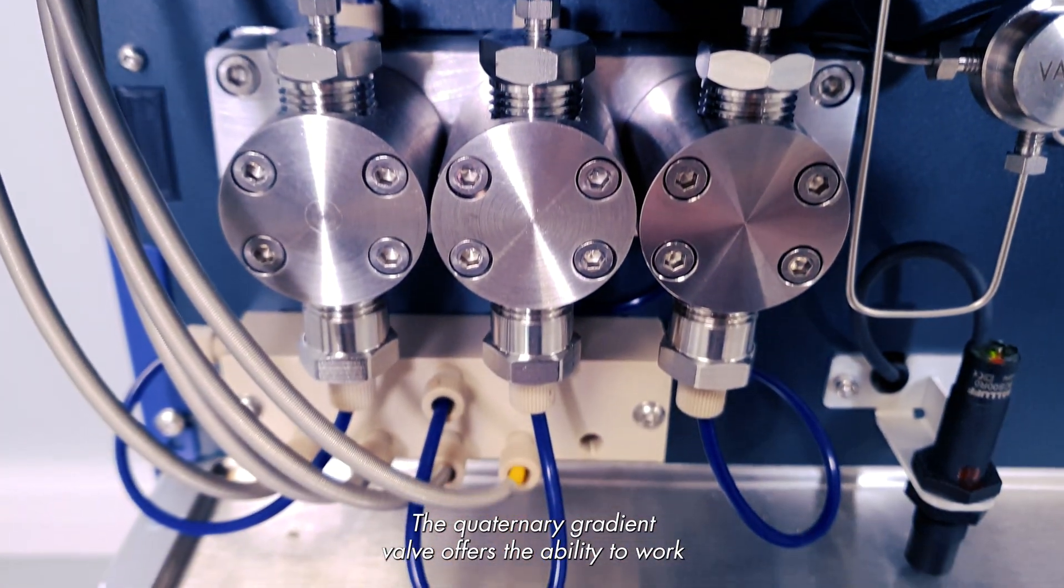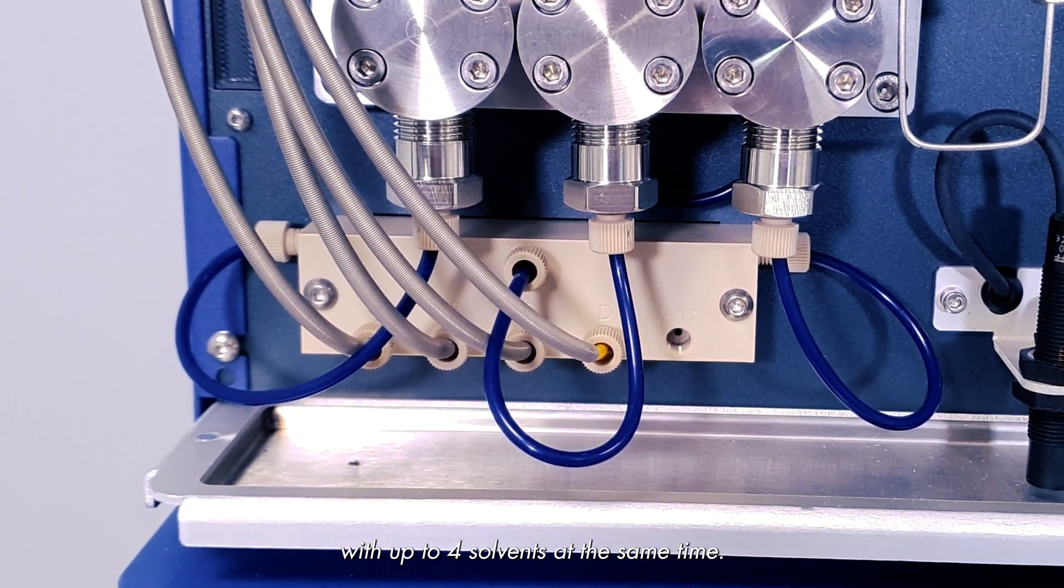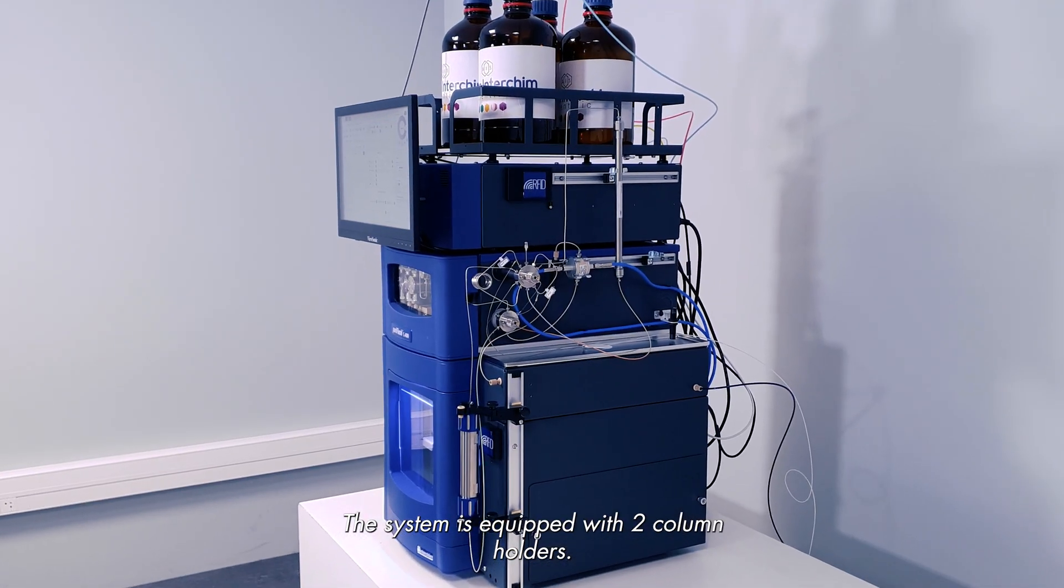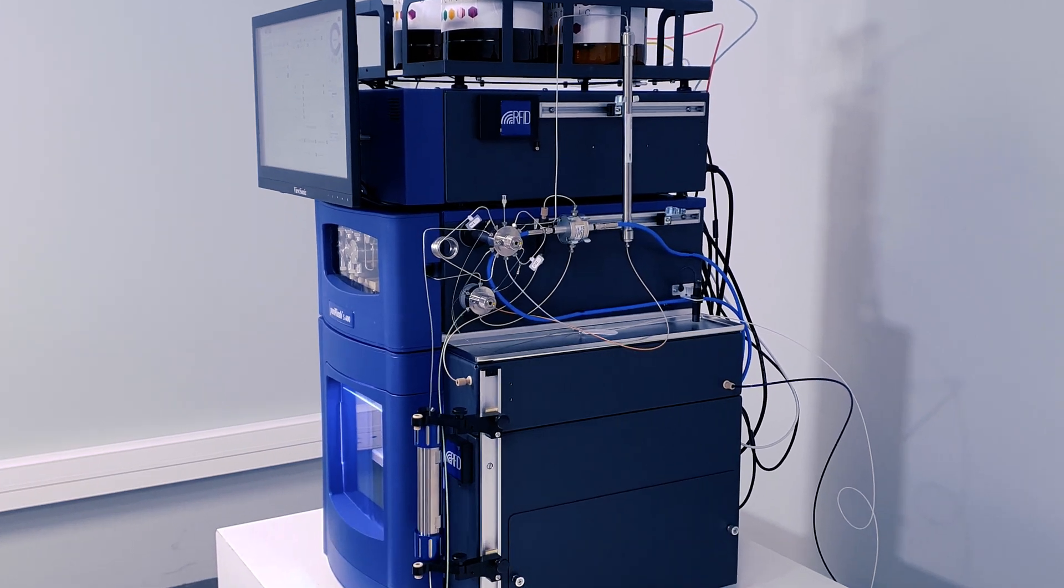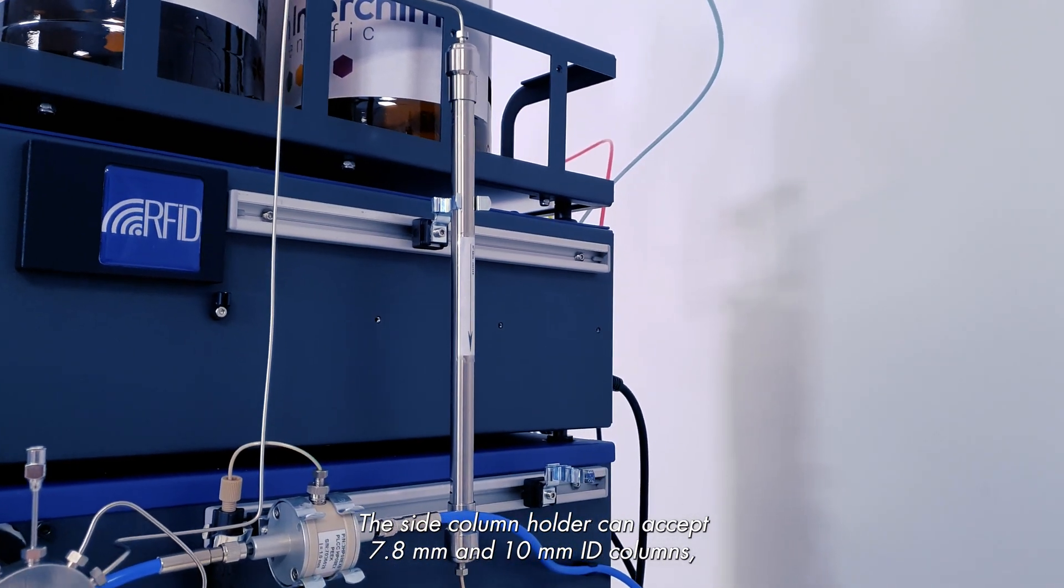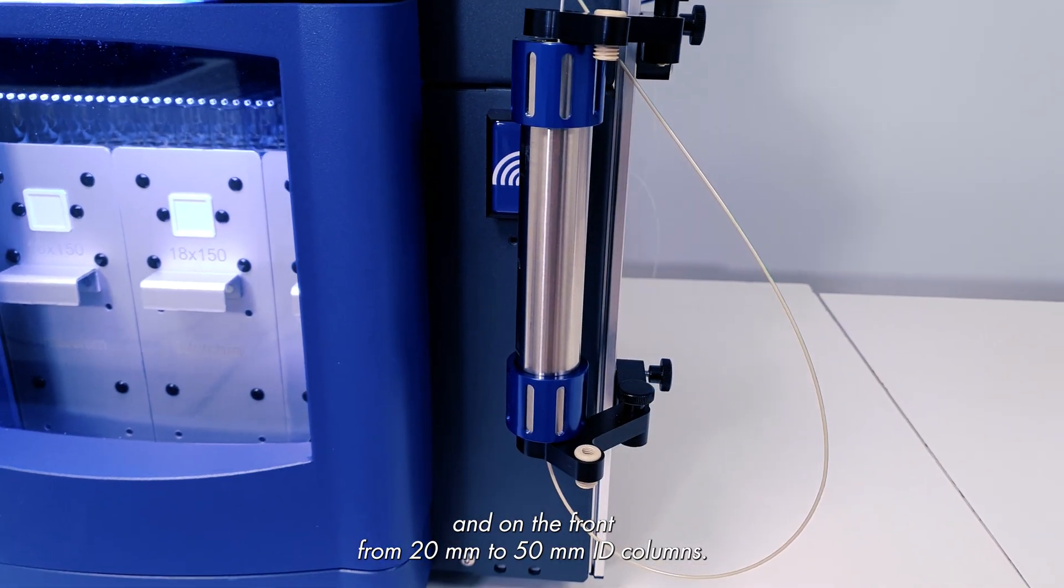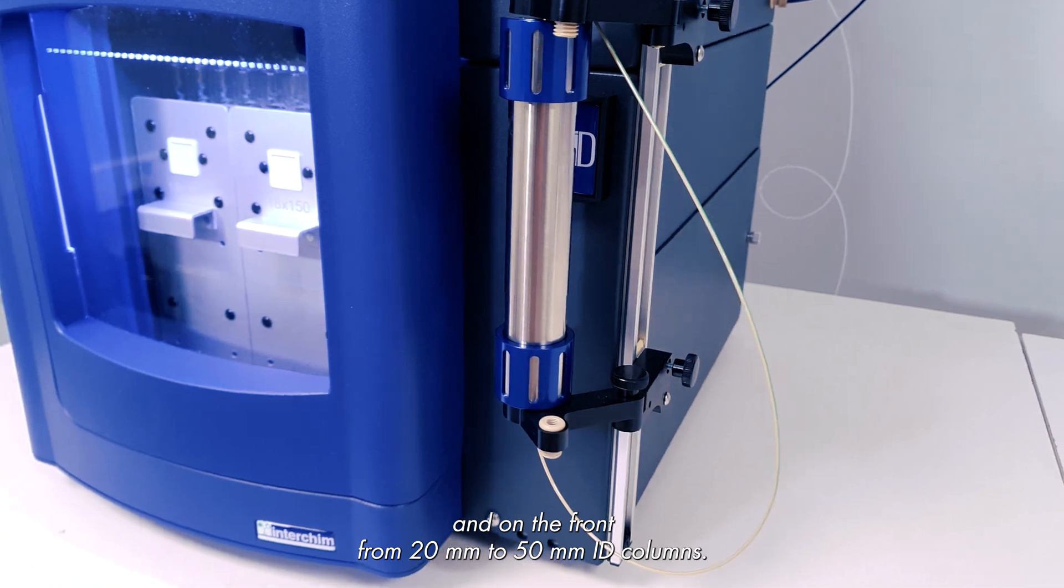The quaternary gradient valve offers the ability to work with up to four solvents at the same time. The system is equipped with two column holders. The side column holder can accept 7.8 mm and 10 mm ID columns, and on the front, from 20 mm to 50 mm ID columns.